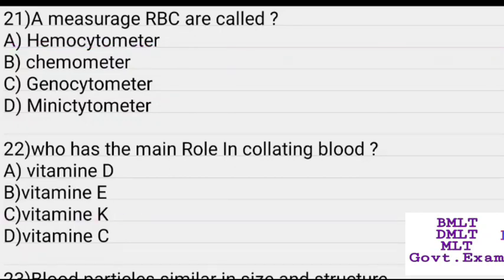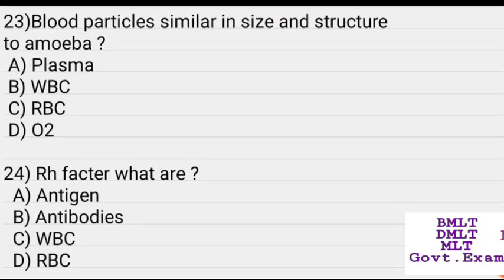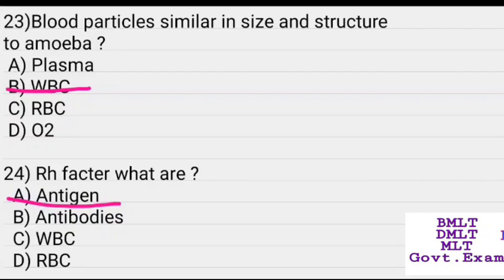Blood particles similar in size and structure to an amoeba are WBCs. What are antibodies? Options: antigen, antibody, WBC, RBC. Answer: Antigen.